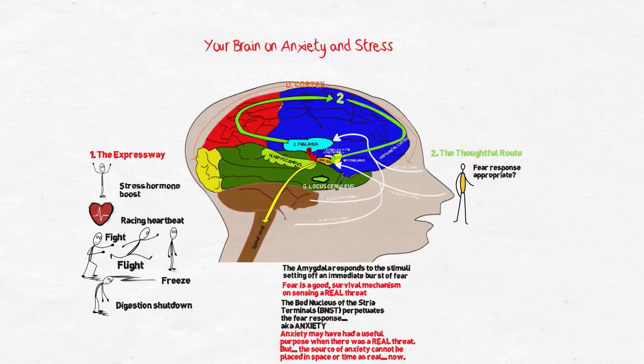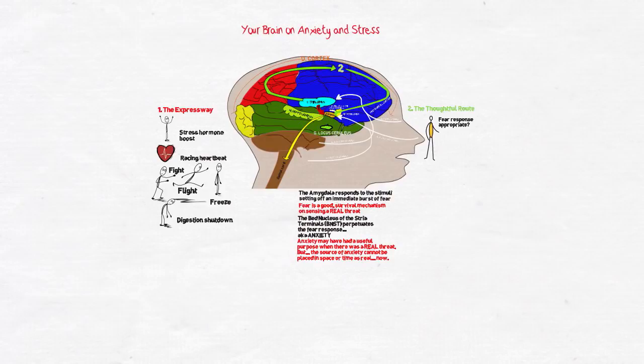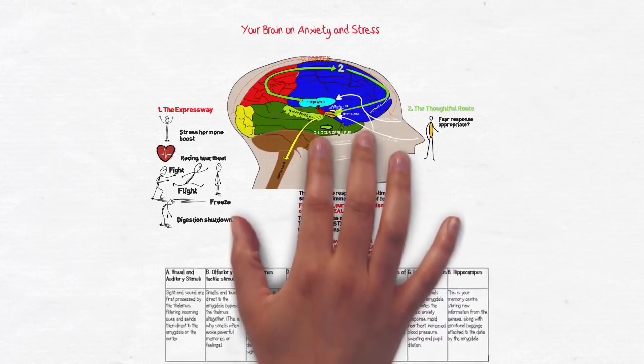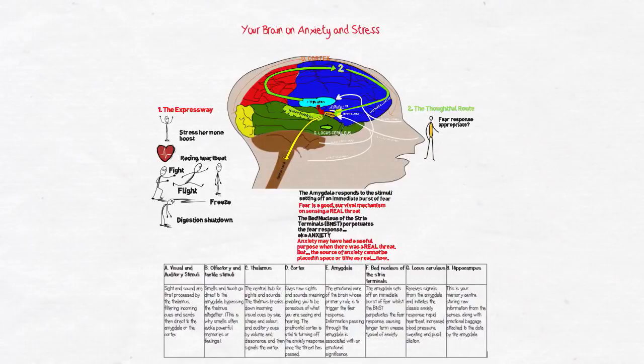Anxiety is a real fear response for the individual feeling anxious, and anxiety can be debilitating for the sufferer. Now that you know how anxiety happens in your brain, you can pay attention to how we can deliberately use our prefrontal cortex to turn off an inappropriate anxiety response once a threat has passed.